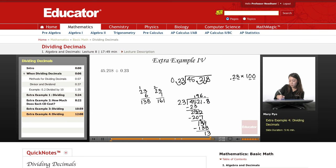Now what happens next? Next, I have to bring this 8 down. So 23 goes into 138, how many times? Well, look at this. It's the same number. So I know that 23 times 6 is 138, right?